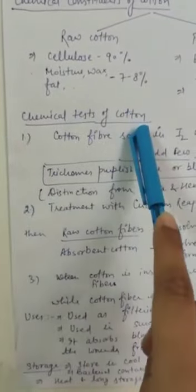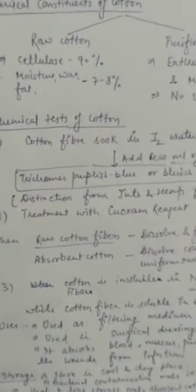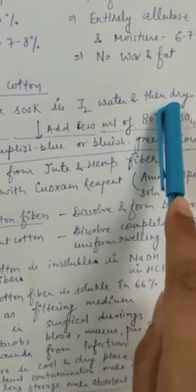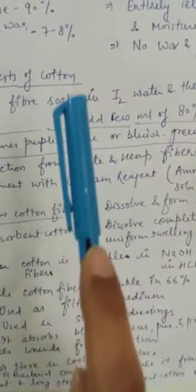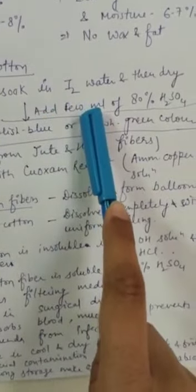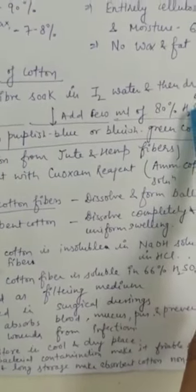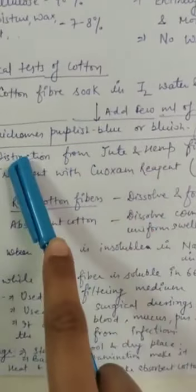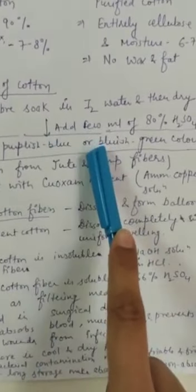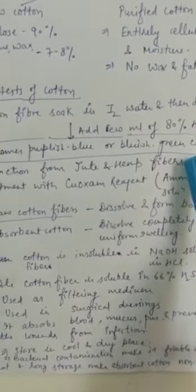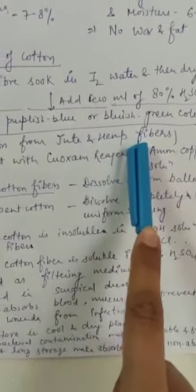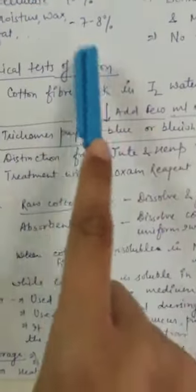Now chemical tests of cotton. First chemical test: when cotton fiber is soaked in iodine water and dried, then we add 80% H2SO4. The color we get is purplish blue or bluish green. This test distinguishes cotton from jute and hemp fibers. This is a specific test for cotton fiber.